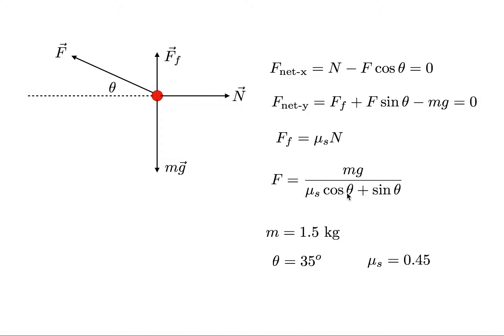So, and we can check. The top has units of newtons. This has no units because it's a coefficient. Cosine has no units, sine has no units. So the whole thing gives me units of newtons.